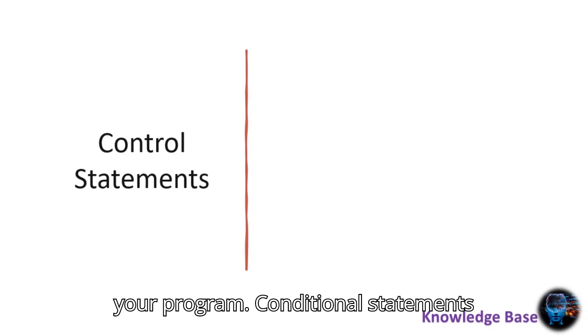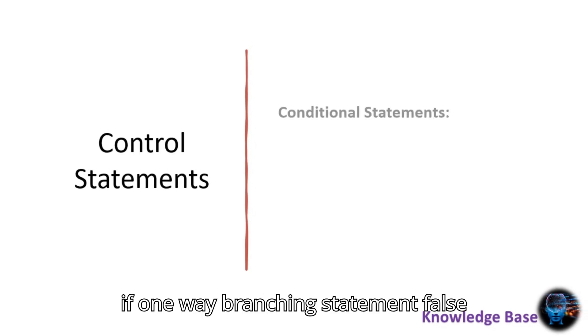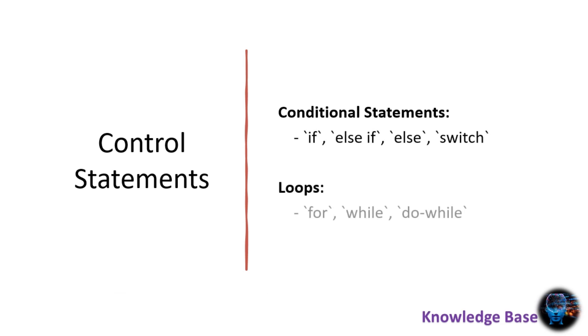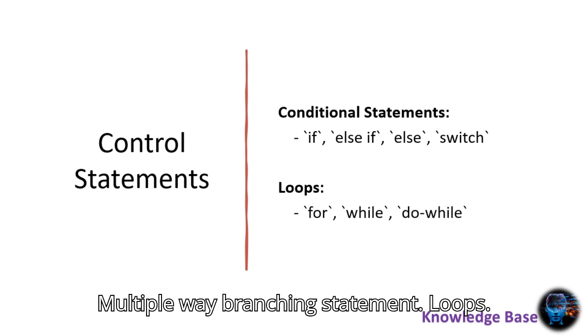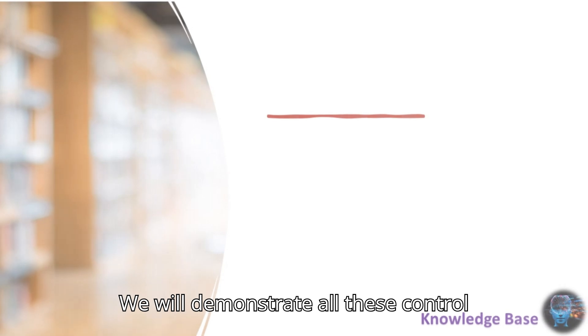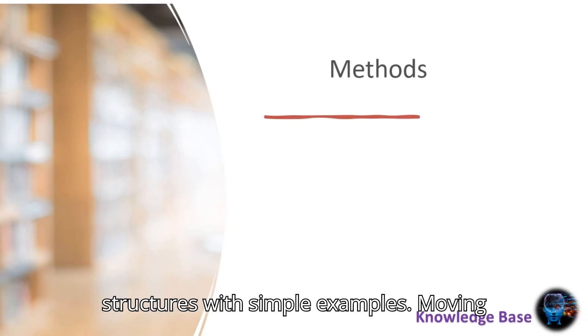Control statements in Java allow you to control the flow of your program. Conditional statements include: if — a one-way branching statement; if-else — a two-way branching statement; and switch — a multiple-way branching statement. Loops include: for loop, while loop, and do-while loop. We will demonstrate all these control structures with simple examples.